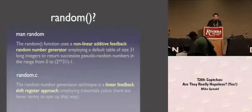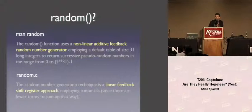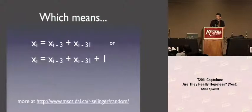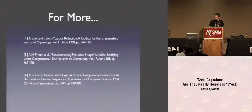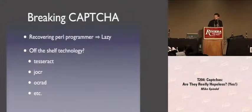You might think RAND is better if you looked at the man page — it says something about a nonlinear additive feedback generator. But the people writing the documentation don't actually know what's going on. If you look at the source, it turns out it's just a linear feedback system, meaning any individual number is the sum of a couple of previous numbers. If you're interested in this random number generator topic, references are on the slides on the CD and the website. Now Scott is going to talk about breaking CAPTCHAs using OCR.